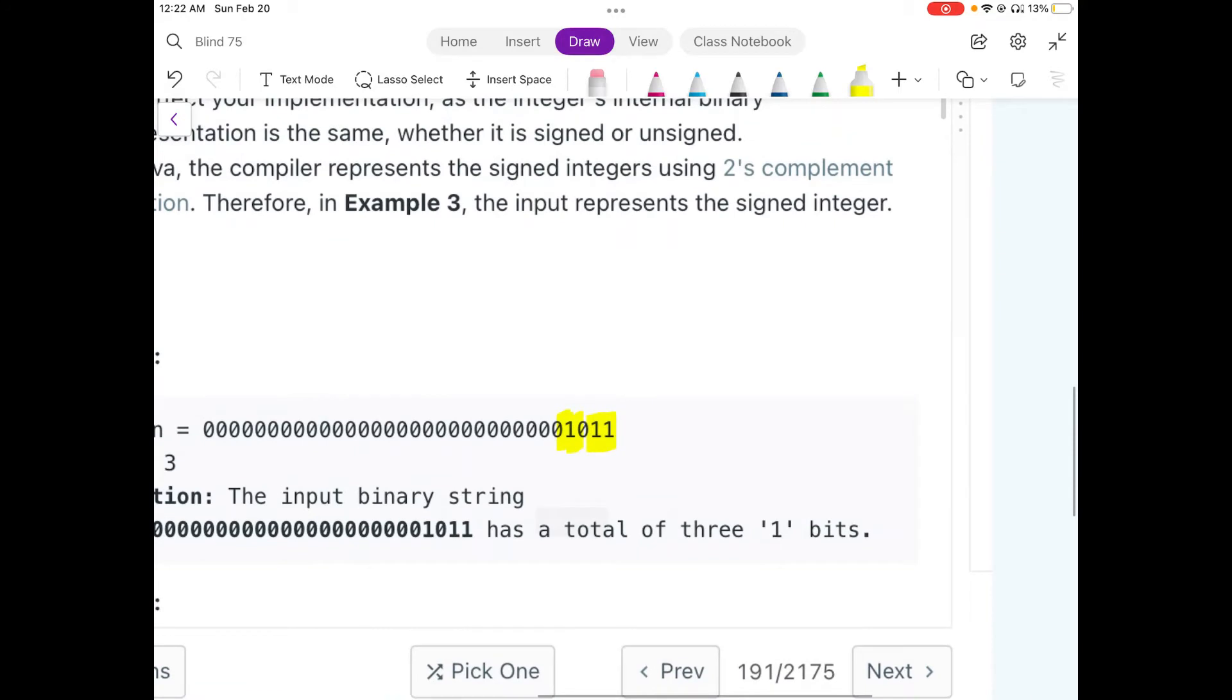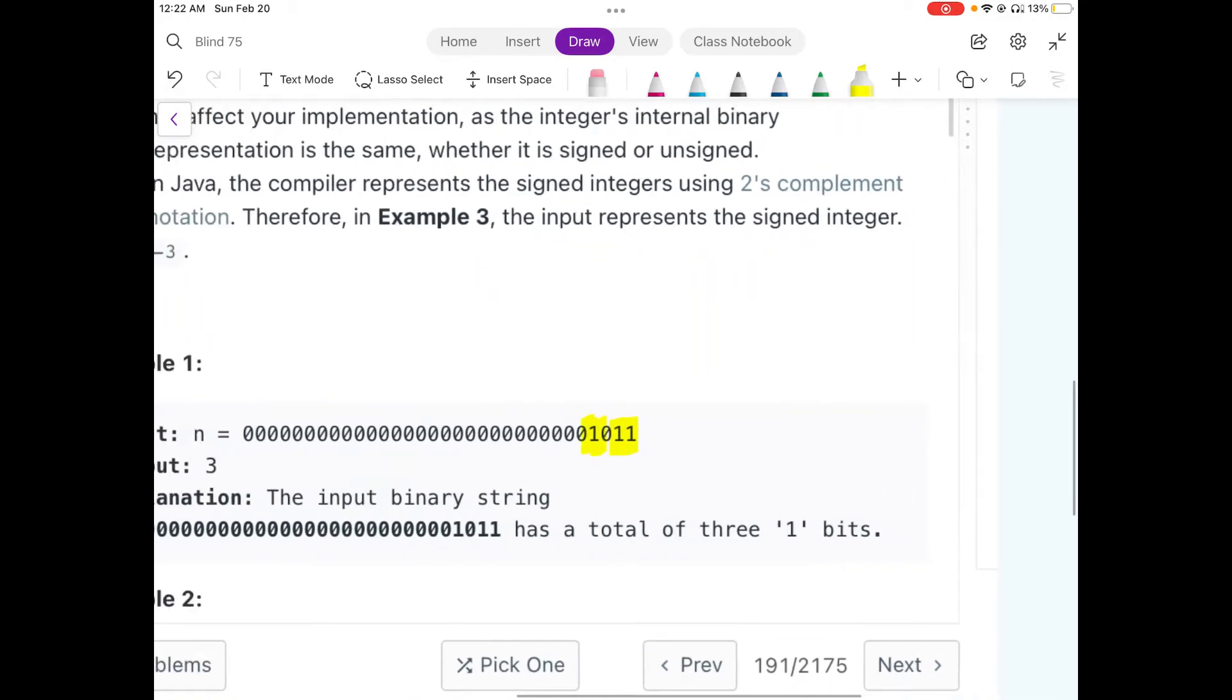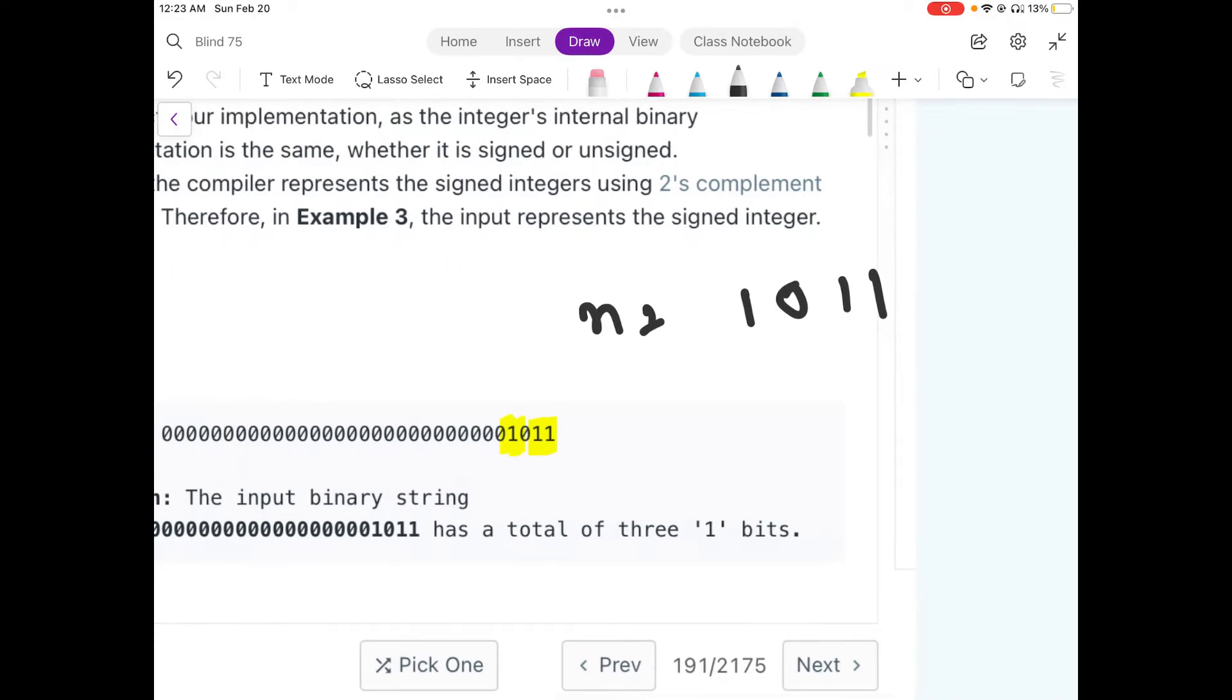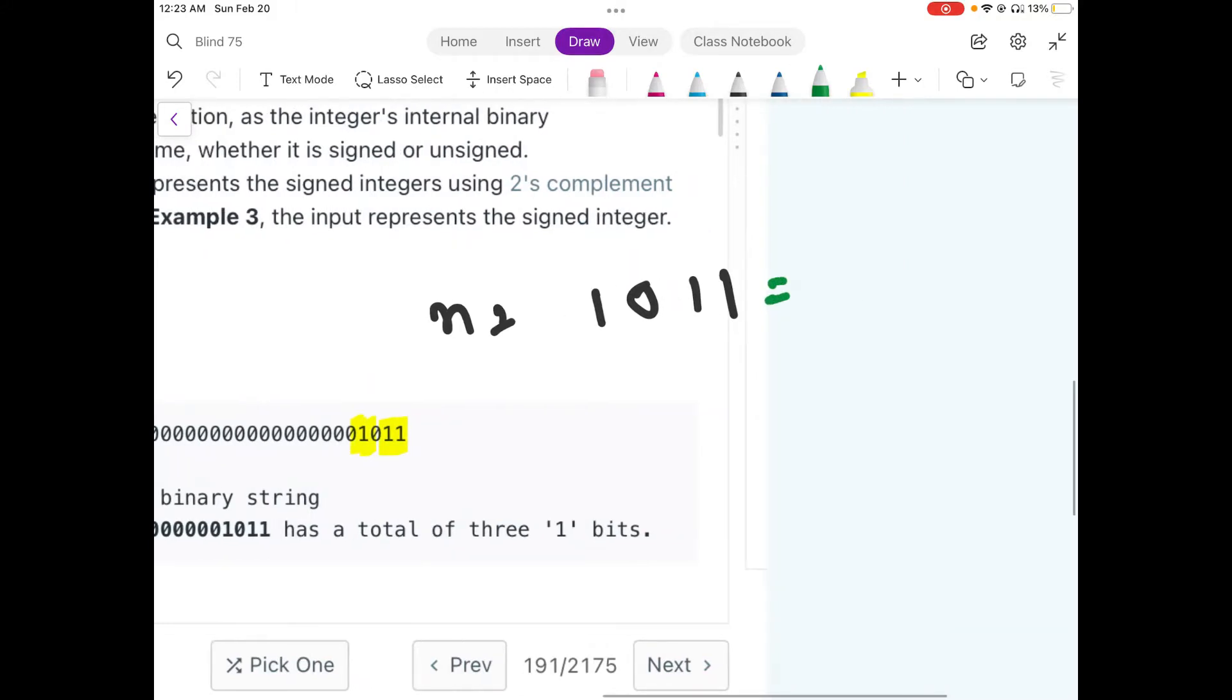So in this given example, we are given a number like this, n equals 1011, which is the binary representation of the decimal value 11.